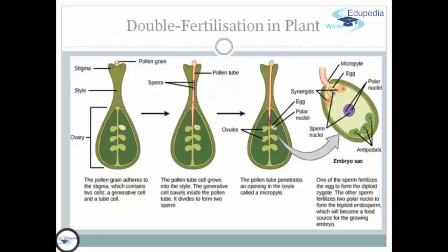As you can see in the image, this is double fertilization in plants. The pollen grain adheres to the stigma and contains two cells: the generative and the tube cell. The pollen tube cell grows into the style. The generative cell travels inside the pollen tube and divides to form two sperm. The pollen tube penetrates an opening in the ovule called the micropyle. In the embryo sac, one sperm fertilizes the egg to form the diploid zygote, and the other sperm fertilizes two polar nuclei to form the triploid endosperm, which becomes a food source for the growing embryo.